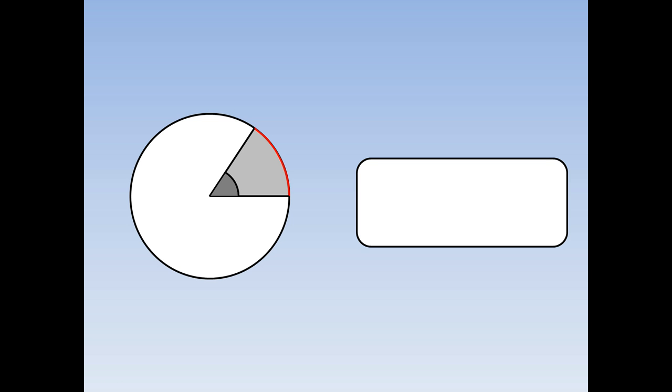If we have a sector of a circle with radius r and the angle of the sector is theta, where theta is in radians, we can work out the arc length using the formula: arc length equals r theta.